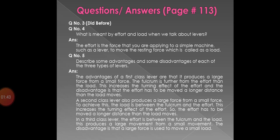Question number 5. Describe some advantages and some disadvantages of each of the three types of levers. Answer: the advantage of a first class lever is that it produces a large force from a small force, as the fulcrum is further from the effort than the load. This increases the turning effect of the effort. The disadvantage is that the effort has to be moved a longer distance than the load moves. A second class lever also produces a large force from a small force. To achieve this, the load is between the fulcrum and the effort, which increases the turning effect of the effort, so the effort has to be moved a longer distance than the load moves.